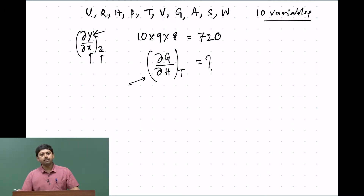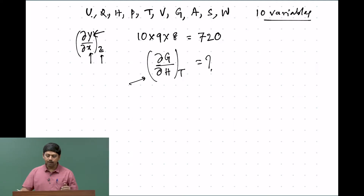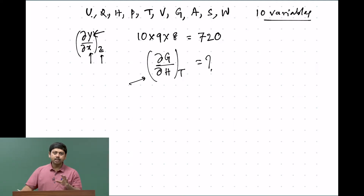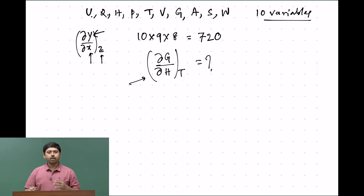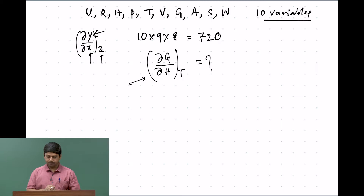Since those quantities are experimentally measurable, we can always relate any partial derivative to them. It may not be possible to directly measure the entropy of a system, and therefore we need indirect relations. This particular subject of conversion and transformation of partial derivatives is very important in thermodynamics, and we are going to discuss that today.